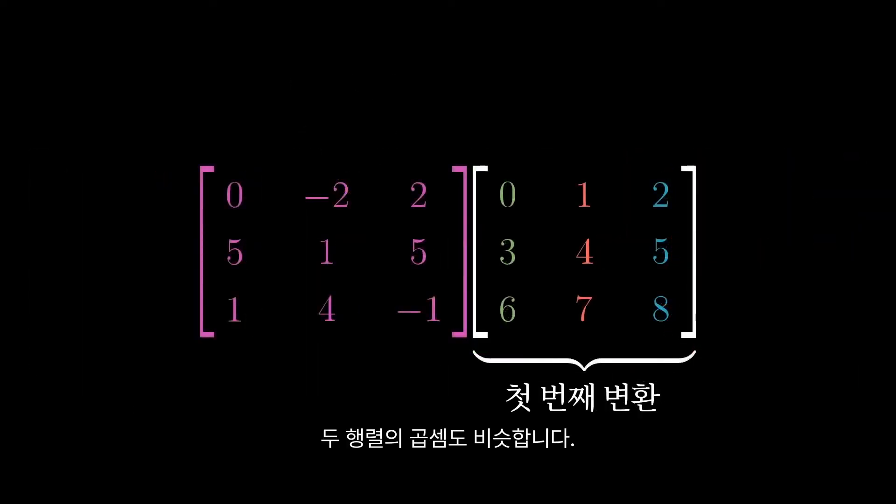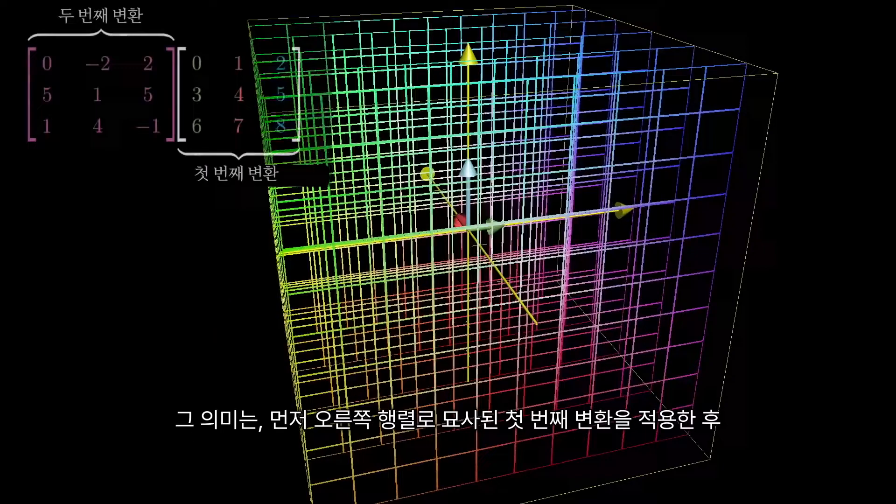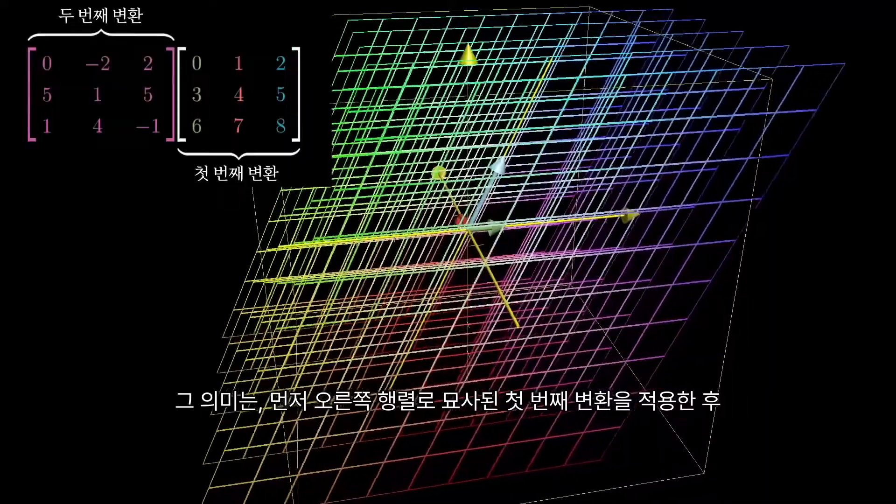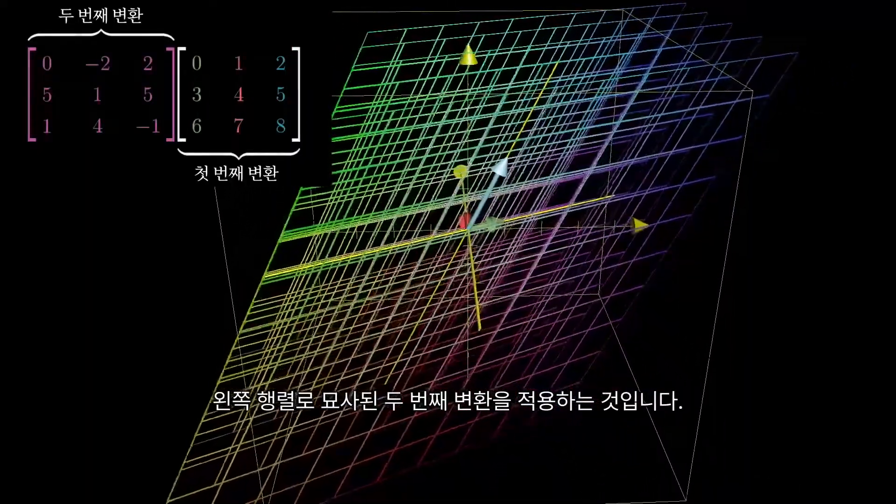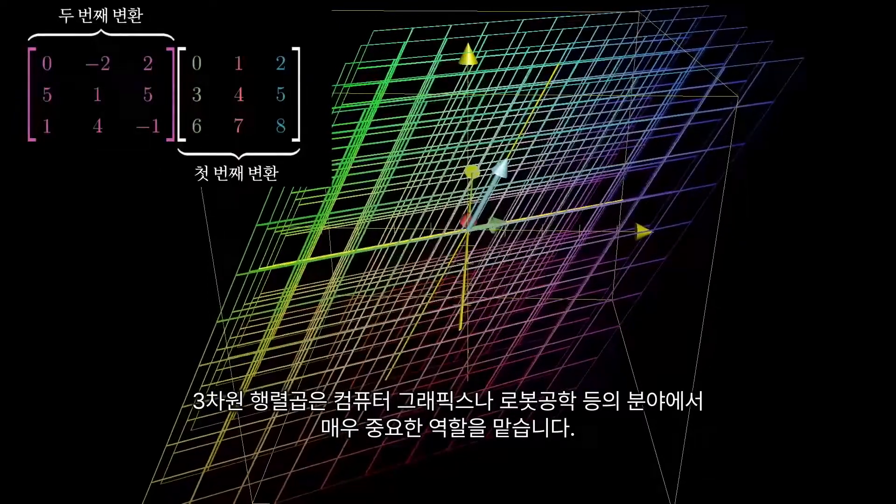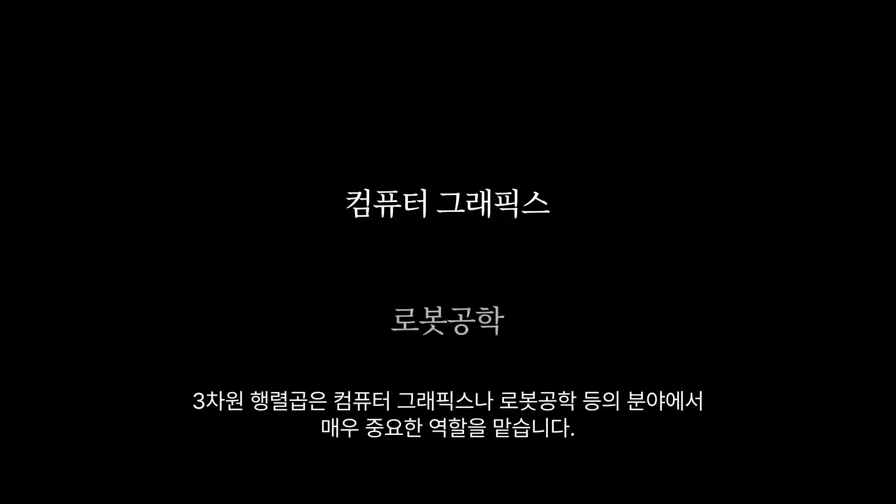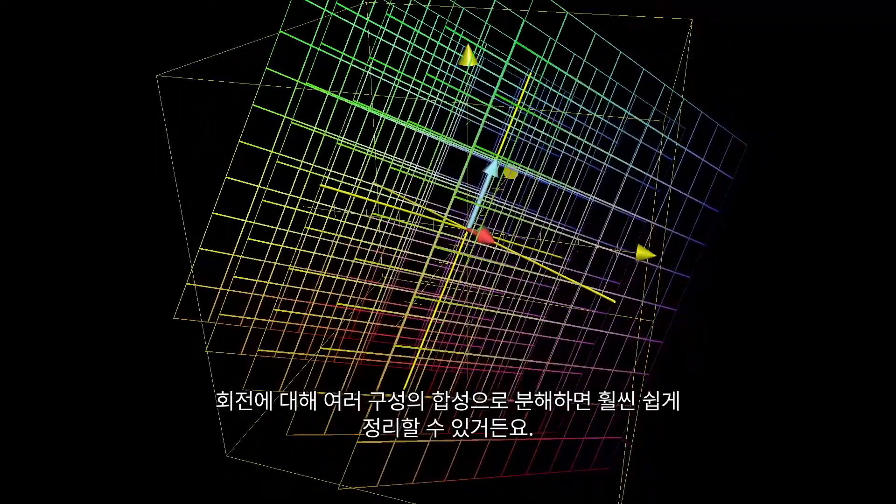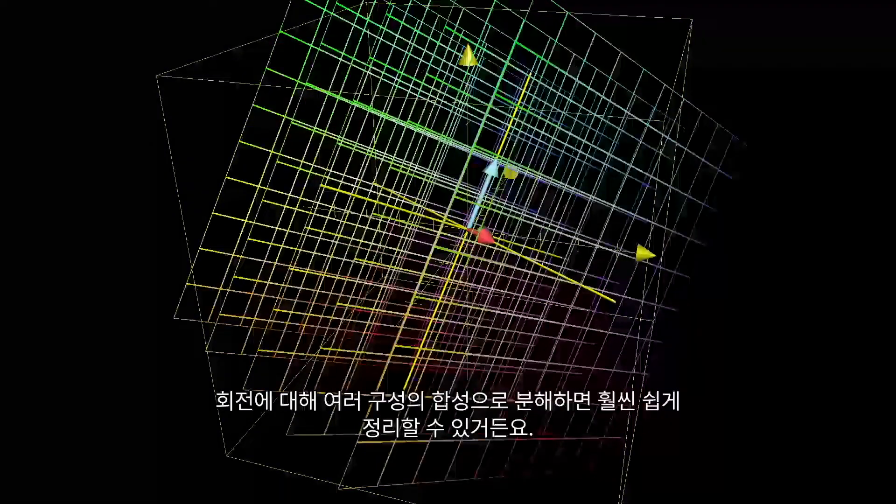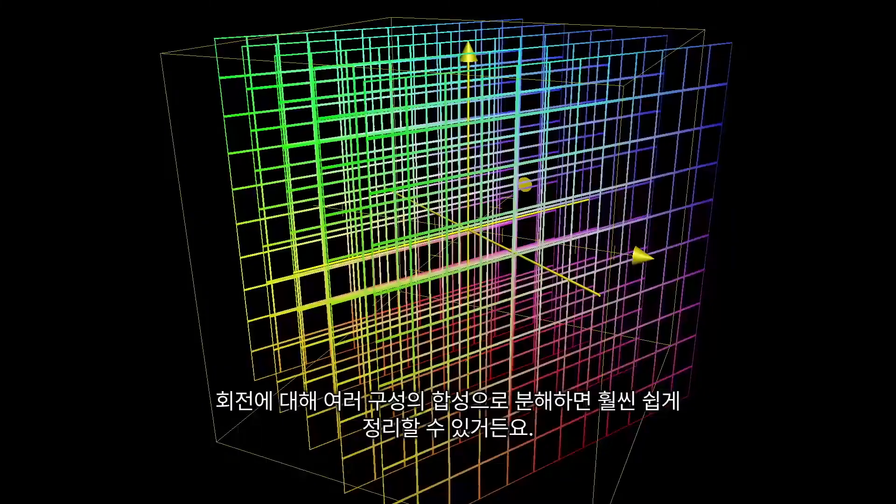Multiplying two matrices is also similar. Whenever you see two 3x3 matrices getting multiplied together, you should imagine first applying the transformation encoded by the right one, then applying the transformation encoded by the left one. It turns out that 3D matrix multiplication is actually pretty important for fields like computer graphics and robotics, since things like rotations in three dimensions can be pretty hard to describe, but they're easier to wrap your mind around if you can break them down as the composition of separate, easier to think about rotations.